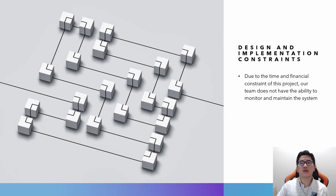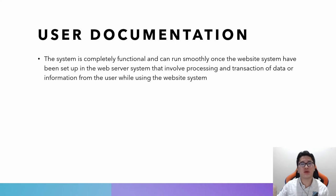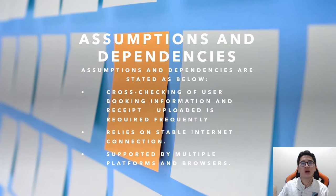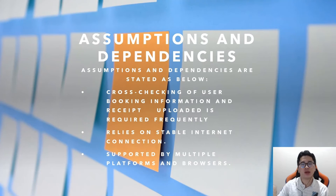In conclusion, due to the time and financial constraints of this project, our team does not have the ability to monitor and maintain the system. As for user documentation, the system is completely functional and can run smoothly once the website system has been set up, involving processing and transaction of data from the user. The assumptions and dependencies are: firstly, cross-checking of user booking information and receipt uploaded is required frequently to ensure the participant has successfully booked for an event; secondly, the system relies on stable Internet connection on both ends to function smoothly; and lastly, the system will be supported by multiple platforms and browsers.